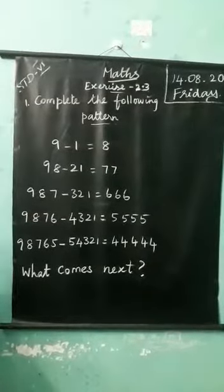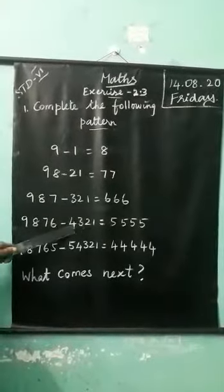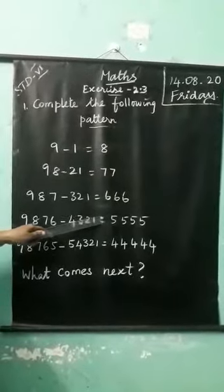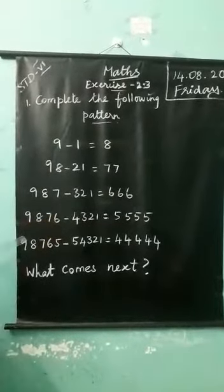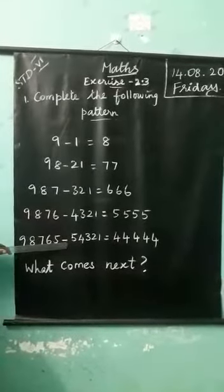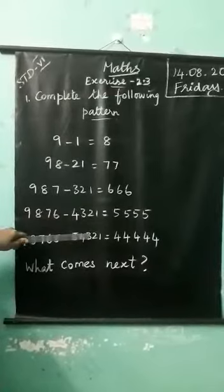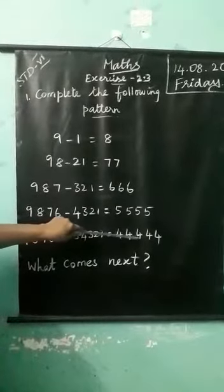987 minus 321 is equal to 666. Then next one. 9876 minus 4321 is equal to 5555. Last one. 98765 minus 54321 is equal to 44444.